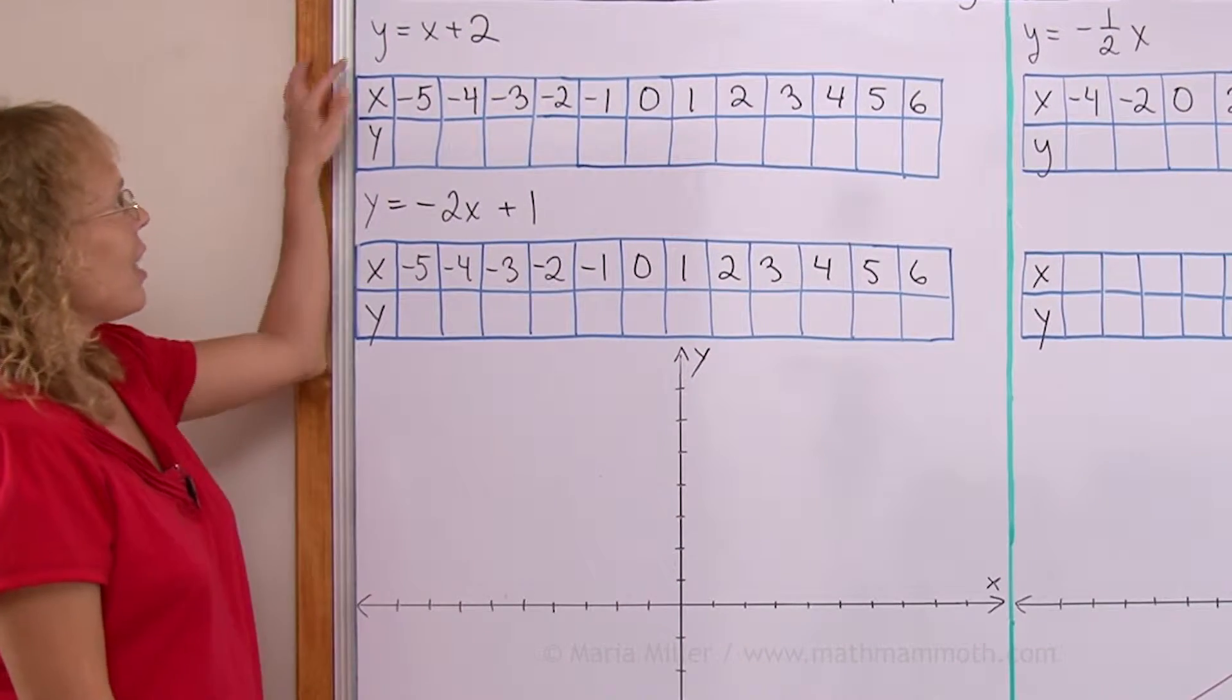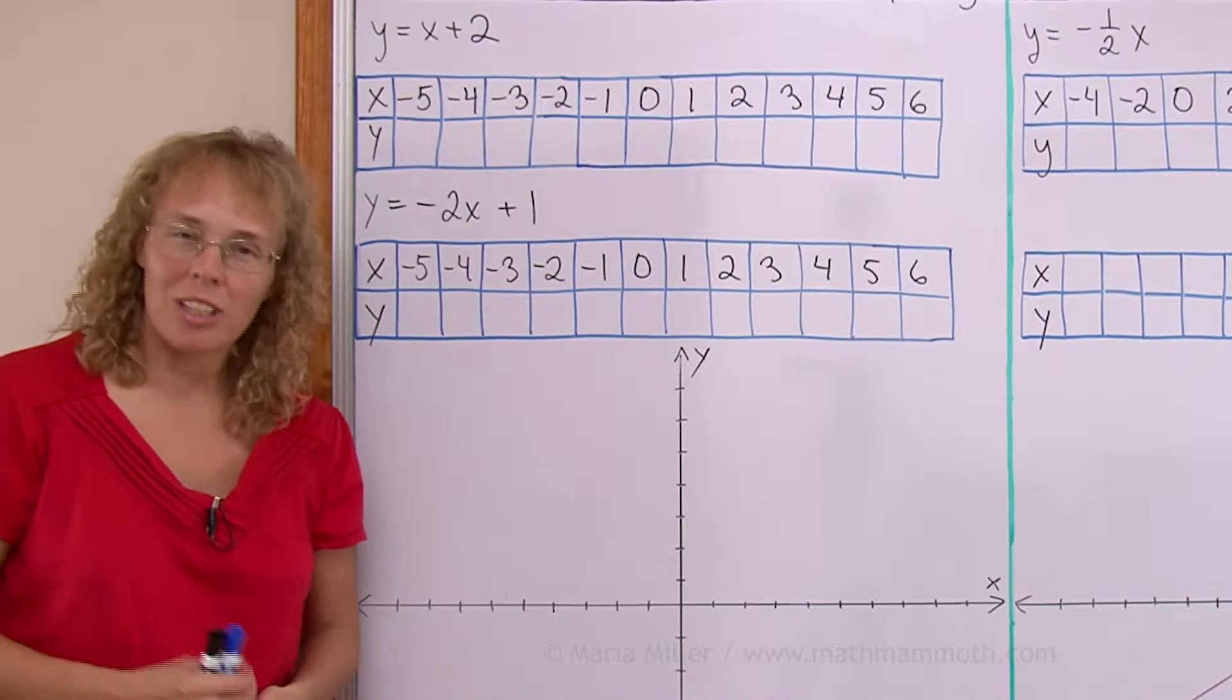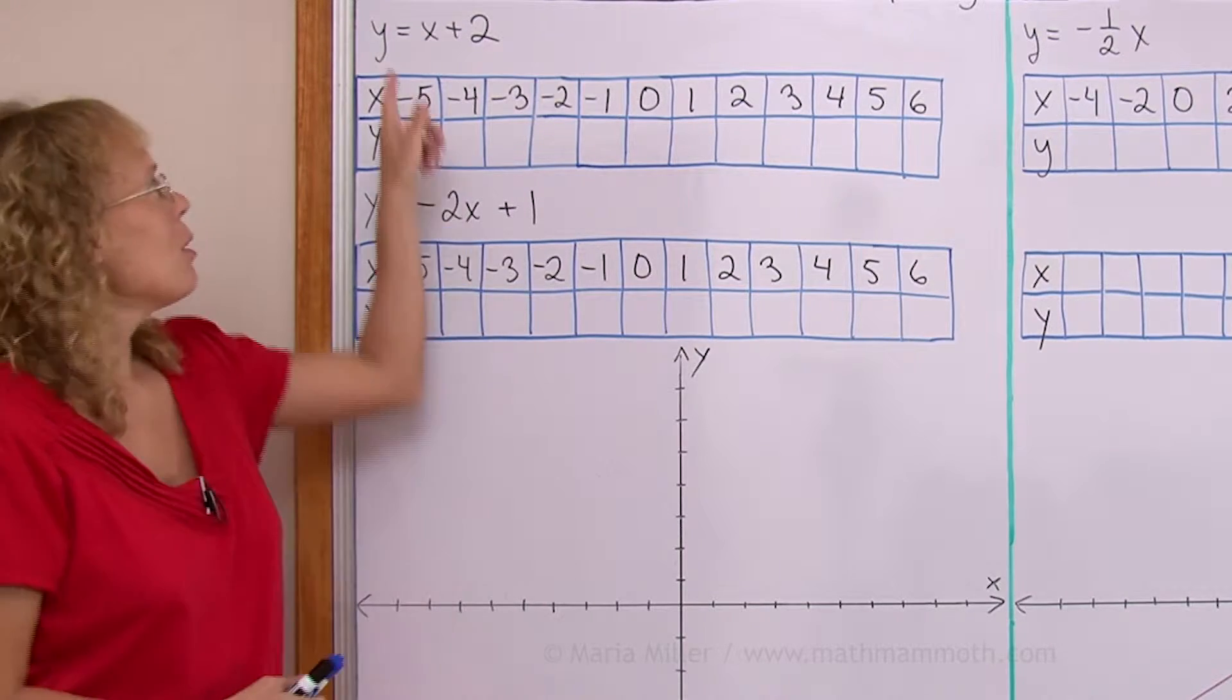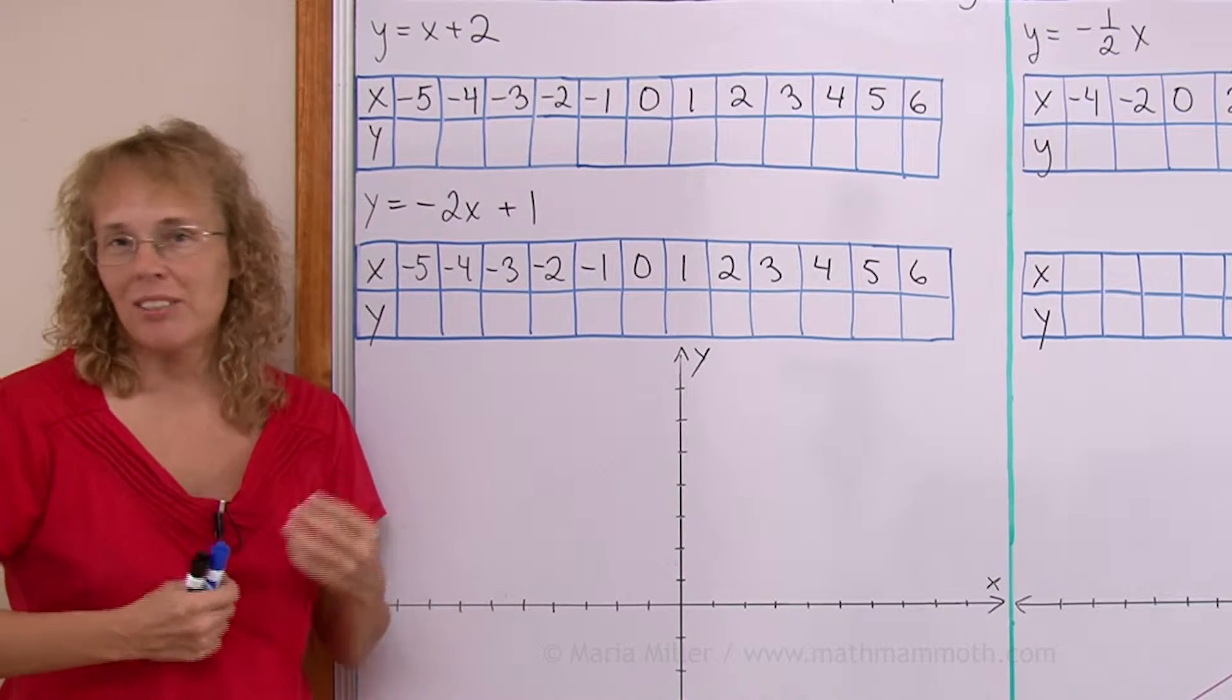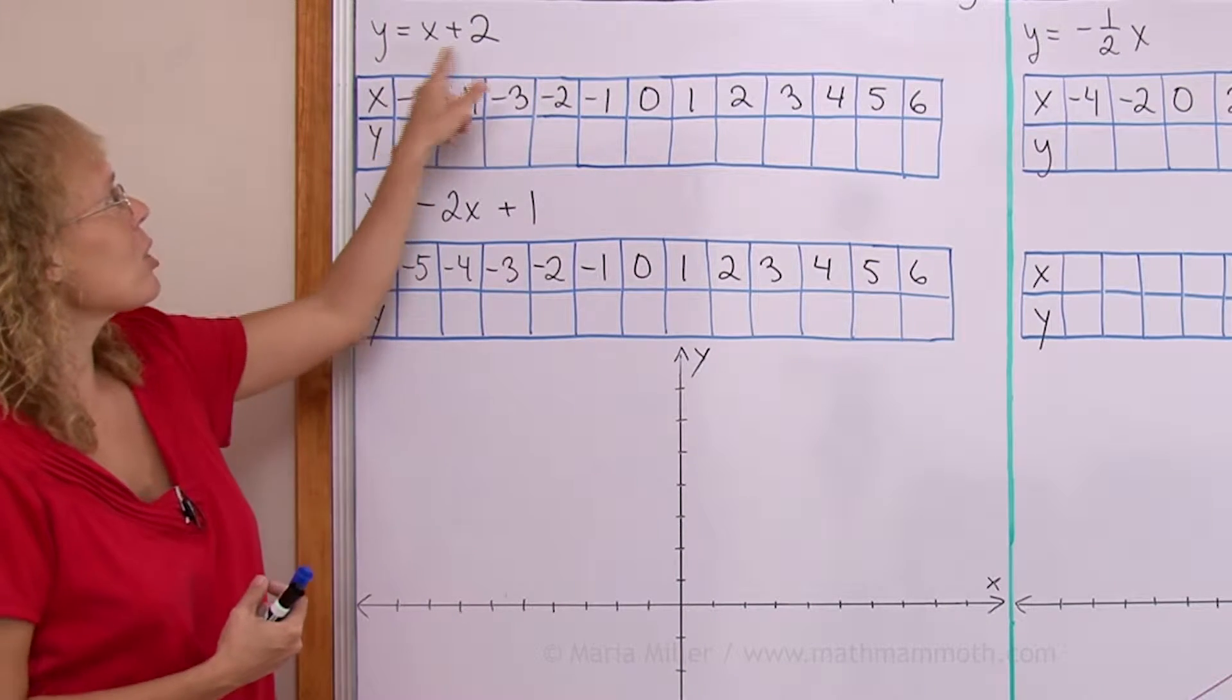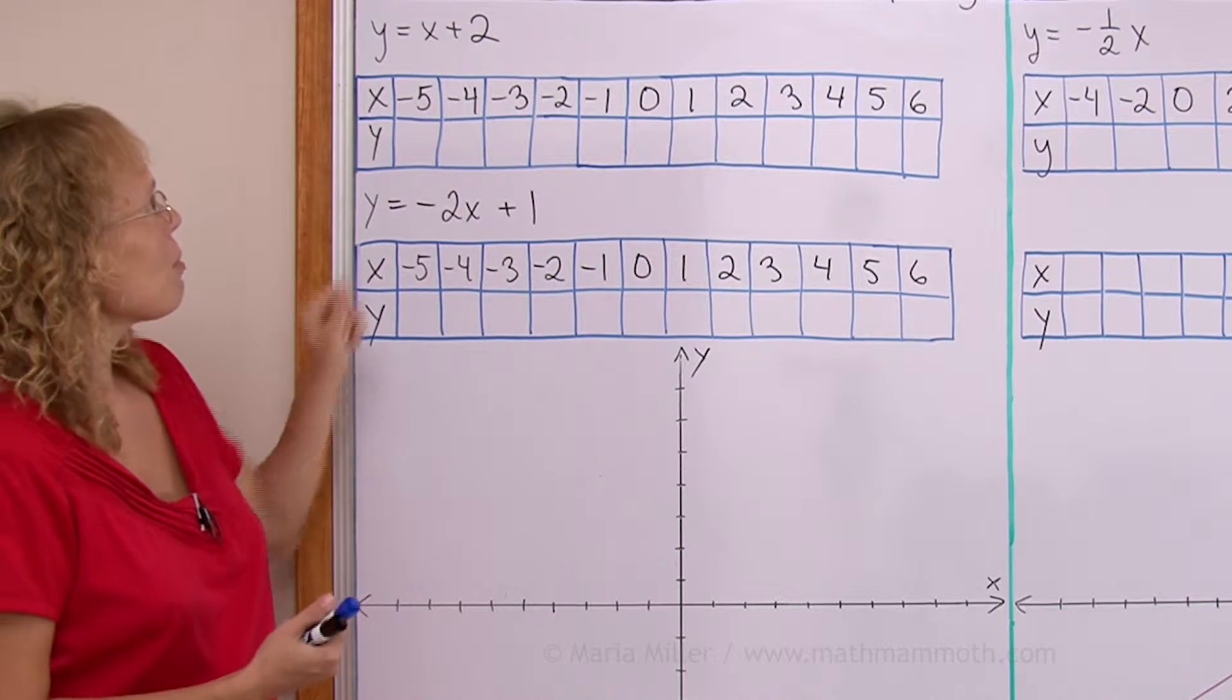Here I have y equals x plus 2, an equation that has two variables, y and x. Both y and x can vary. They can get different values and the equation can still be true.